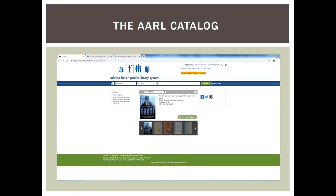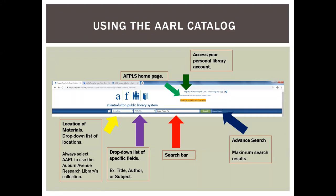This is what the library catalog looks like — you'll notice a large blue search bar. The yellow arrow indicates the location of materials; selecting it brings a dropdown list of locations. The Auburn Avenue Research Library is the only branch within Atlanta Fulton County that does not circulate, so if you want to search all resources within Auburn's collection, select the Auburn Avenue Research Library. If you select everything, it searches everything within the Atlanta Fulton Public Library system.